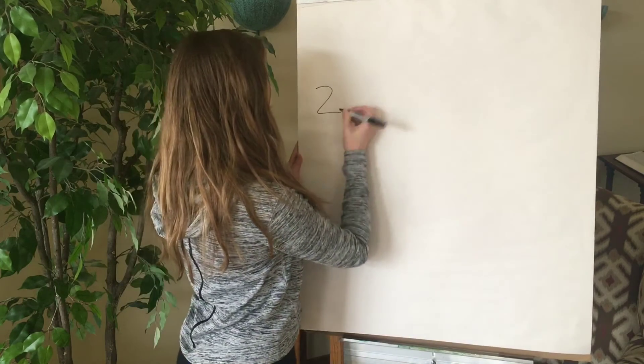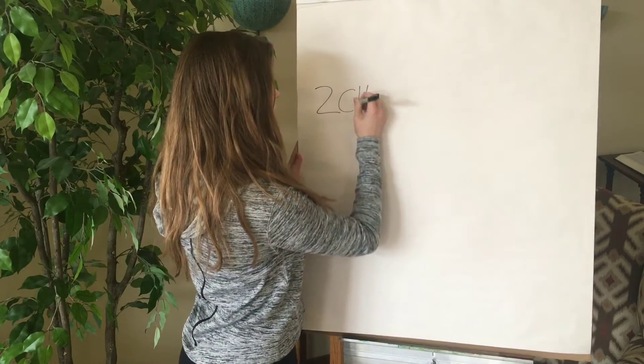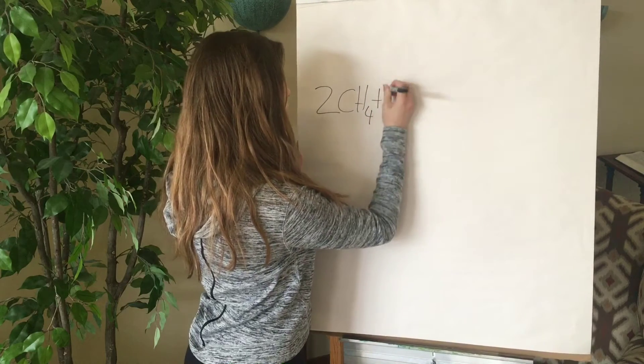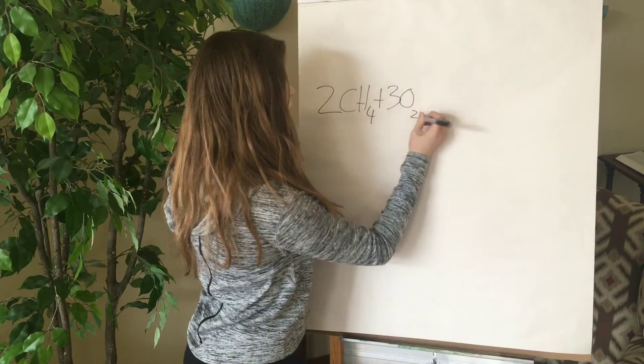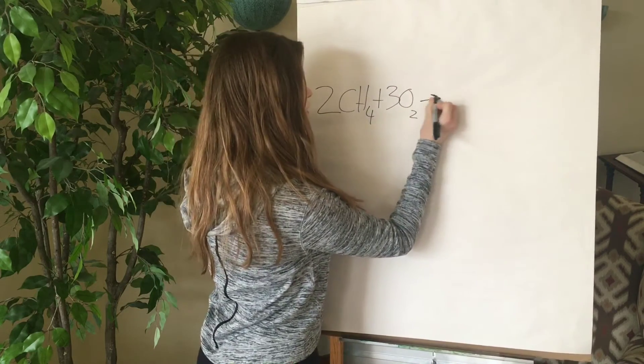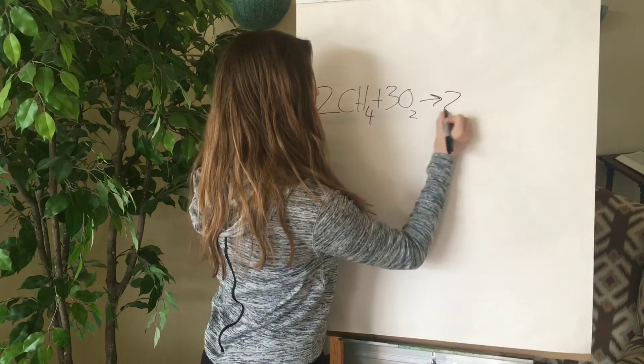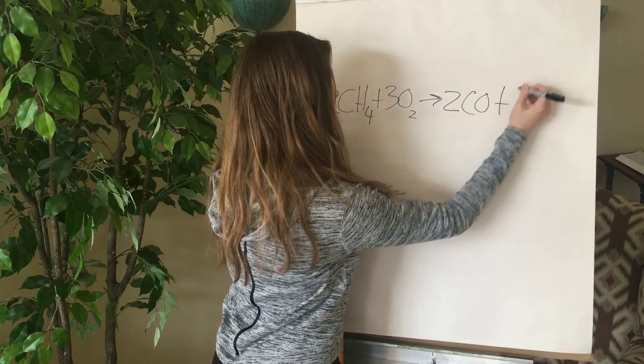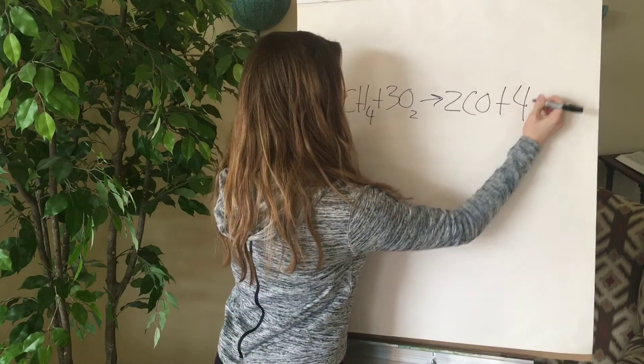For example, this equation shows what happens when there is incomplete combustion of natural gas. When there are two molecules of natural gas combined with three molecules of oxygen, this yields two molecules of carbon monoxide and four molecules of water.